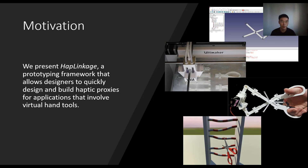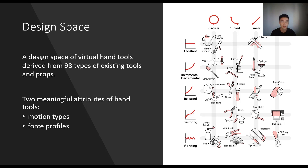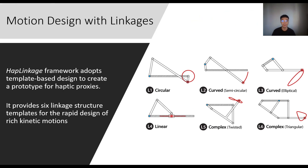In this paper, we present HyperLinkage, a prototyping framework that allows designers to quickly design and build haptic proxies for applications that involve virtual hand tools. We derived the design space from 98 types of existing tools and props, and found two meaningful attributes of hand tools, one of which is the motion types. To achieve these different motions, we use a linkage mechanism and provide six linkage structure templates for the rapid design of rich kinetic motions.